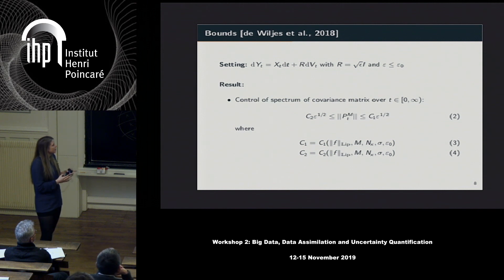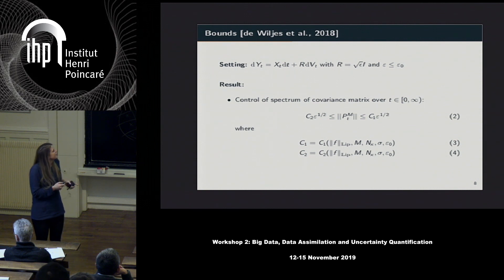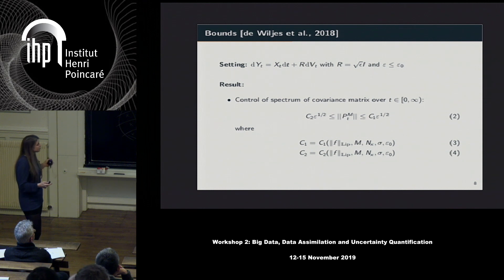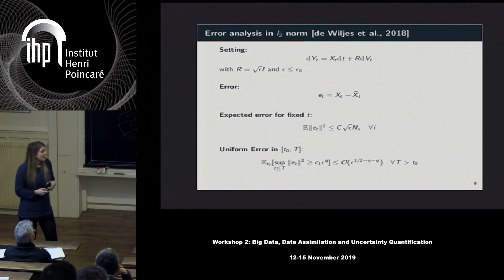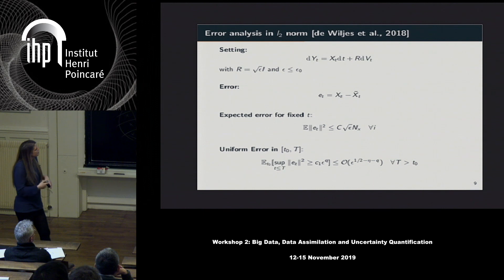Later we have results where we get rid of the dimension dependence M by using a different proof strategy. This was the first result — we were able to control the covariance matrix, and while it may not seem like a big result, there are actually very few results even in this simple setting. There is some work for localized and inflated variants, but for this particular version without those modifications there are no results like this.